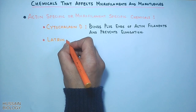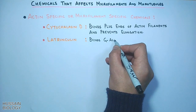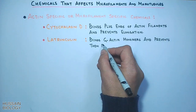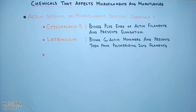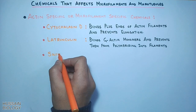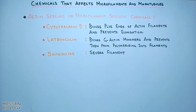The second chemical that affects microfilaments or actin filaments is Latrunculin. It binds G-actin monomers and prevents them from polymerizing into filaments. Basically, Latrunculin binds actin monomers near the nucleotide binding cleft and halts polymerization. Then we have Swinholide — it severs F-actin filaments, so this is also an actin-disrupting chemical.